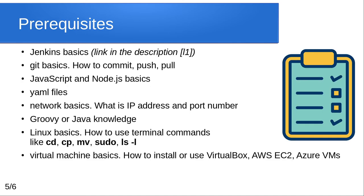Before you start, please check if you meet the requirements. You have to be familiar with some Jenkins basics — you have to know what a Jenkins job is and how to install a plugin. If you don't know, check the link in the description; it is a course from Automation Step by Step. You also have to know how to use git, as the pipeline development requires a lot of commits and pushes.